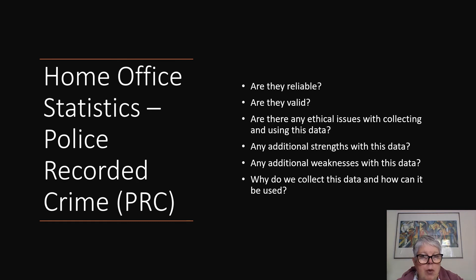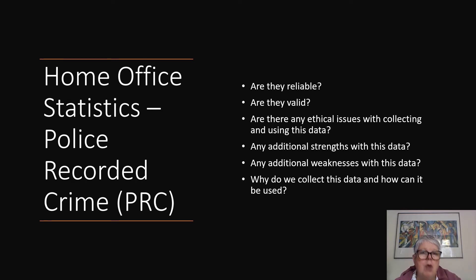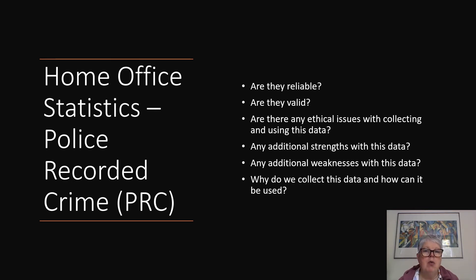The first question to ask yourself is: are these statistics reliable? Ideally the police should be using the same criteria to record the statistics. So anyone who comes forward — whether in Newcastle, Cornwall, or London — with the same crime, the police should be recording it and recording it in the same way.